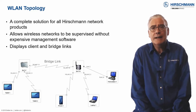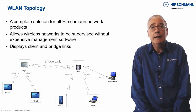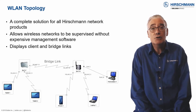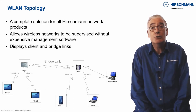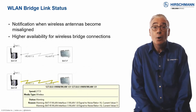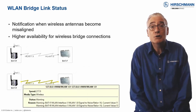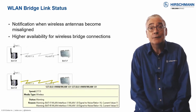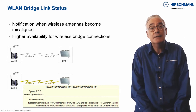If you are using wireless LAN bridge links to extend your cabling, Industrial HiVision will provide you with a consistent view across your complete network. Wireless bridge links can save you time and money when used as an alternative to cables.